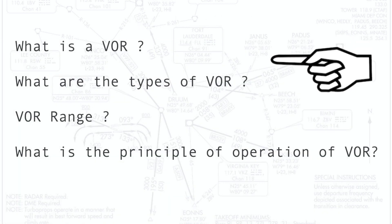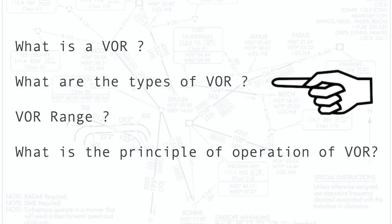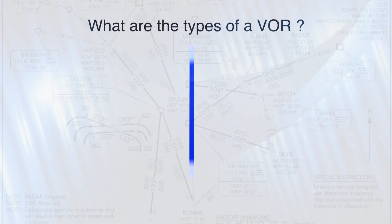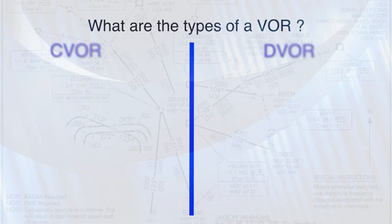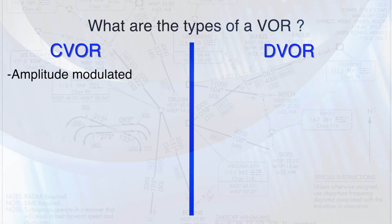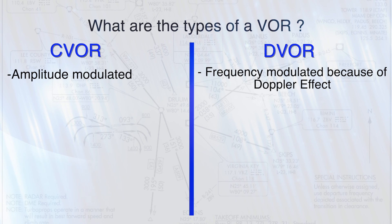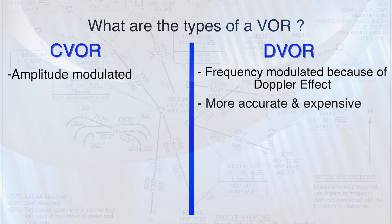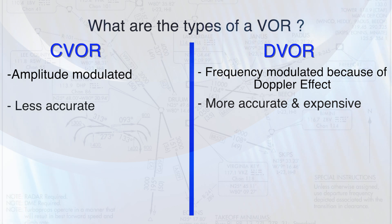Now we're going to look at the types of VOR. There are two types: conventional VOR and Doppler VOR. The conventional is amplitude modulated, whereas the DVOR is frequency modulated because of the Doppler effect. The DVOR is also more accurate and more expensive, while the conventional is less accurate.